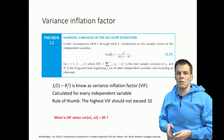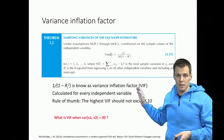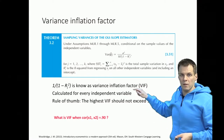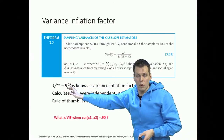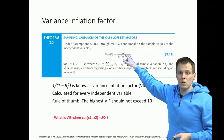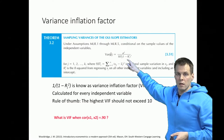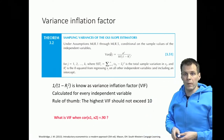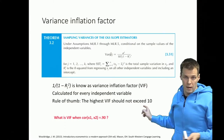This inflation of the variance of estimates is quantified by the variance inflation factor (VIF). The VIF quantifies how much larger the variance of an estimate is compared to a hypothetical scenario where the variable would be uncorrelated with every other variable. The VIF is defined as 1 divided by (1 minus R-squared) of the focal variable regressed on all other independent variables. When that R-squared approaches 1, the VIF goes to infinity; when R-squared is 0, the VIF is 1, meaning multicollinearity is not present. A common rule of thumb is that the VIF should not exceed 10.